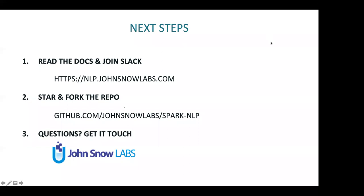Where does the name John Snow Labs come from? It definitely comes from the 1854 cholera epidemic. Dr. John Snow was a physician in Victorian London, most famous for stopping a cholera outbreak by analyzing data — he built a map of all the people who died, discovered a specific water well most likely causing the infection, the water pipe was disabled, and the epidemic stopped. That's really one of the first great examples of using data to improve public health — hence the inspiration behind the company name.